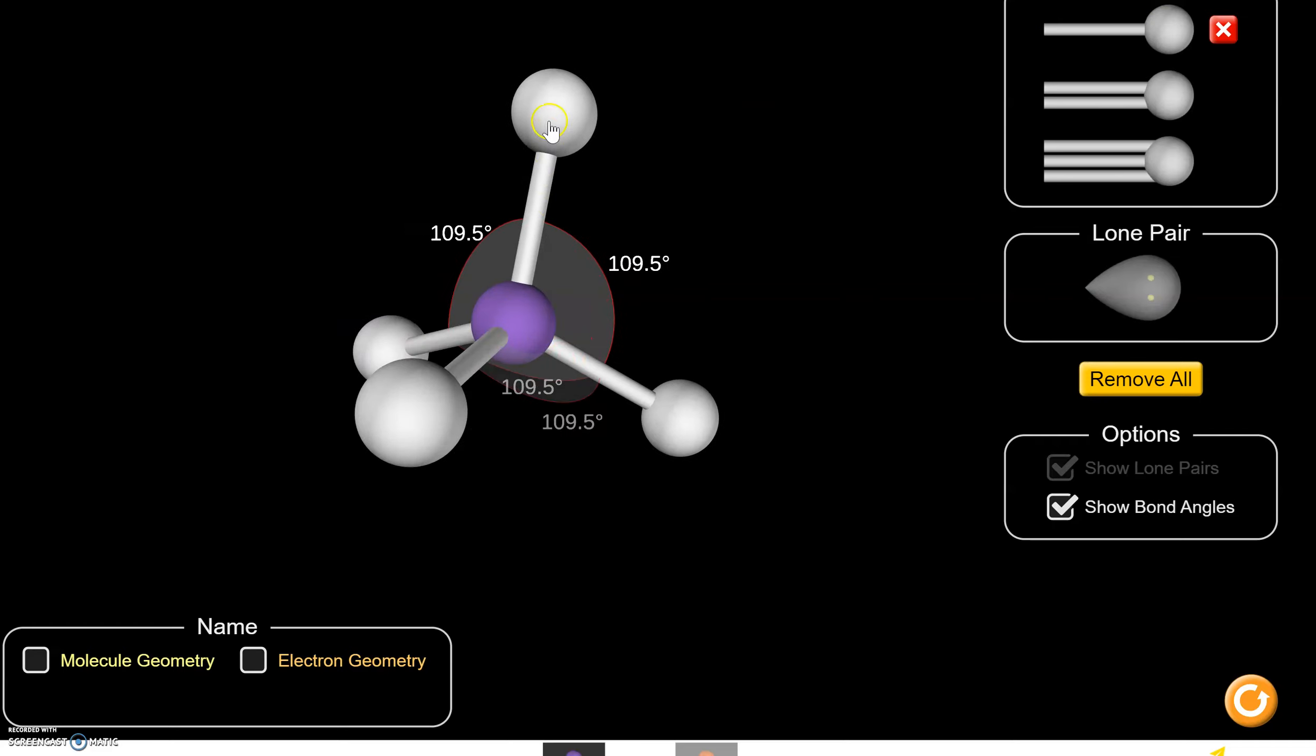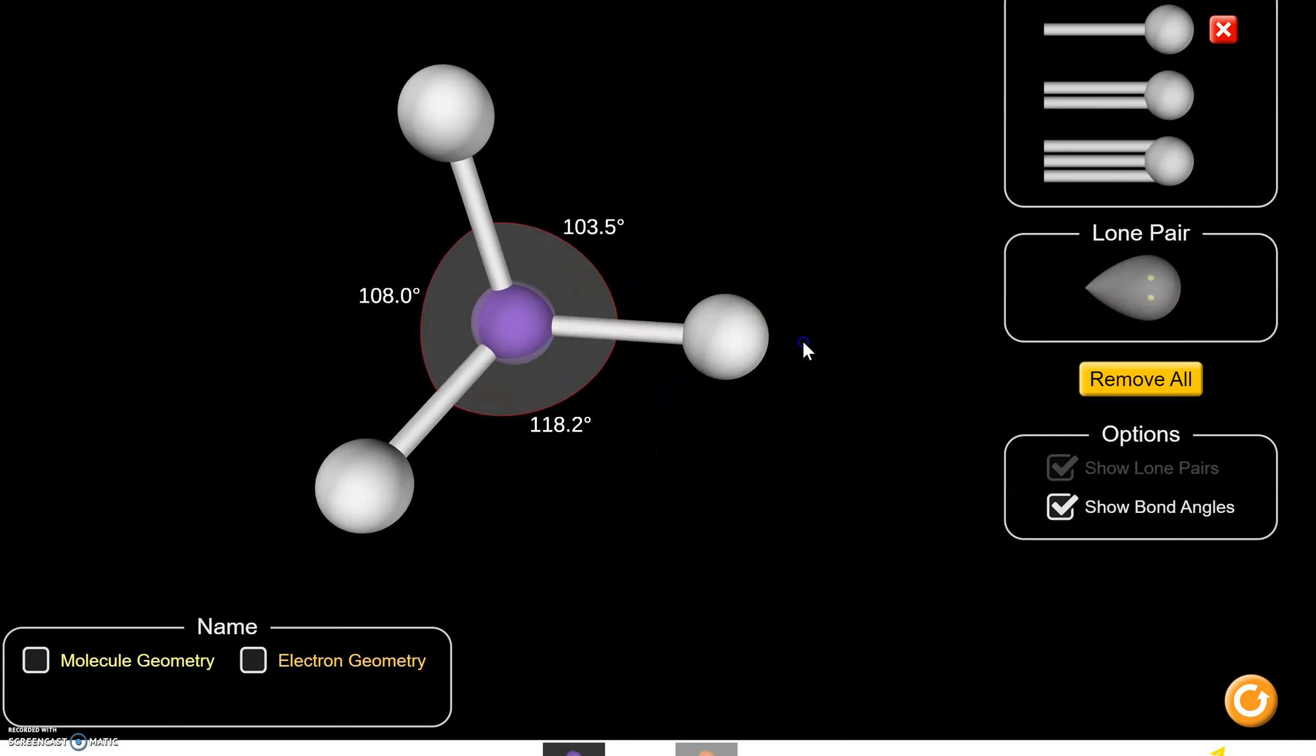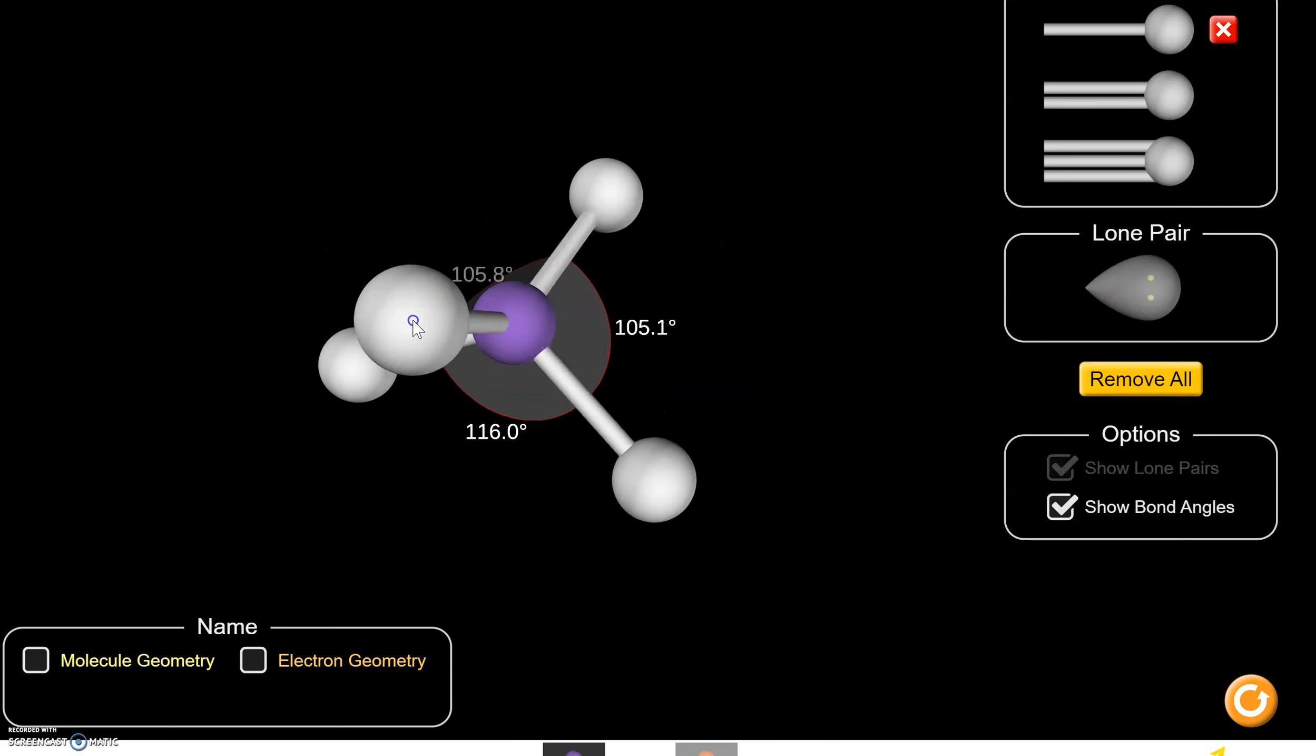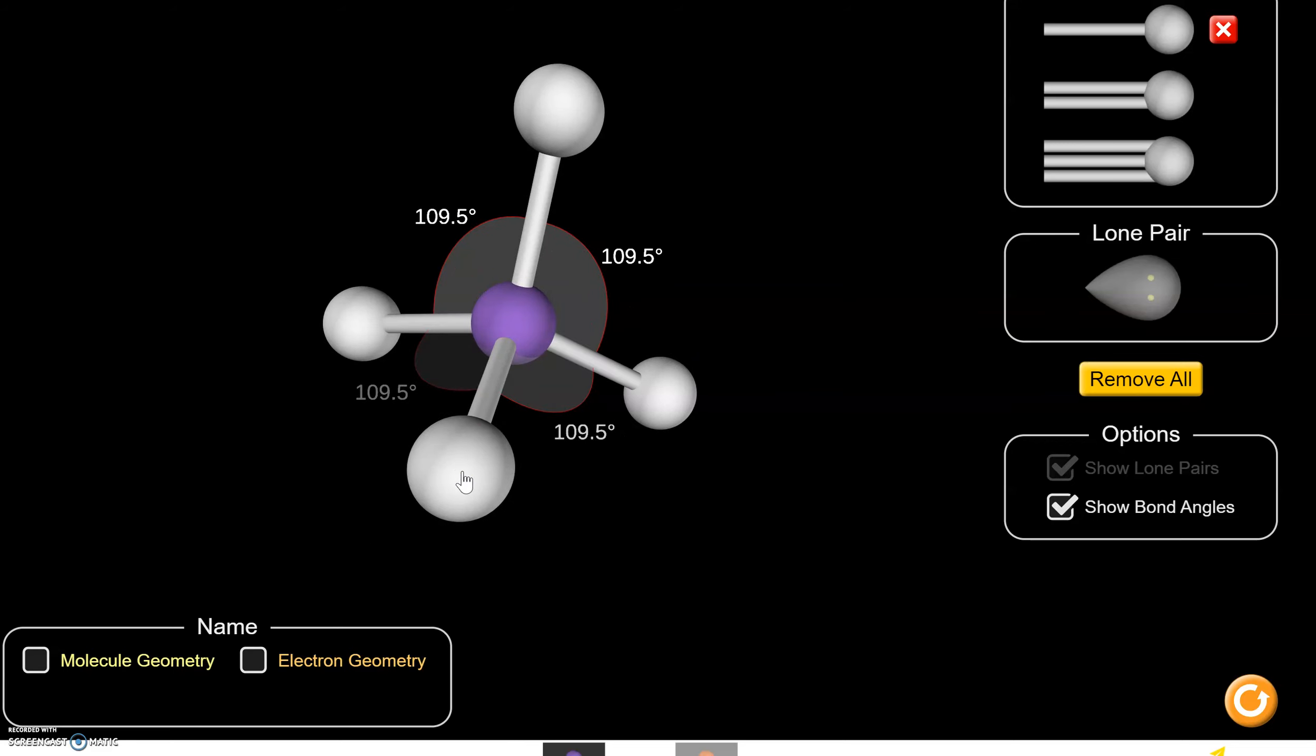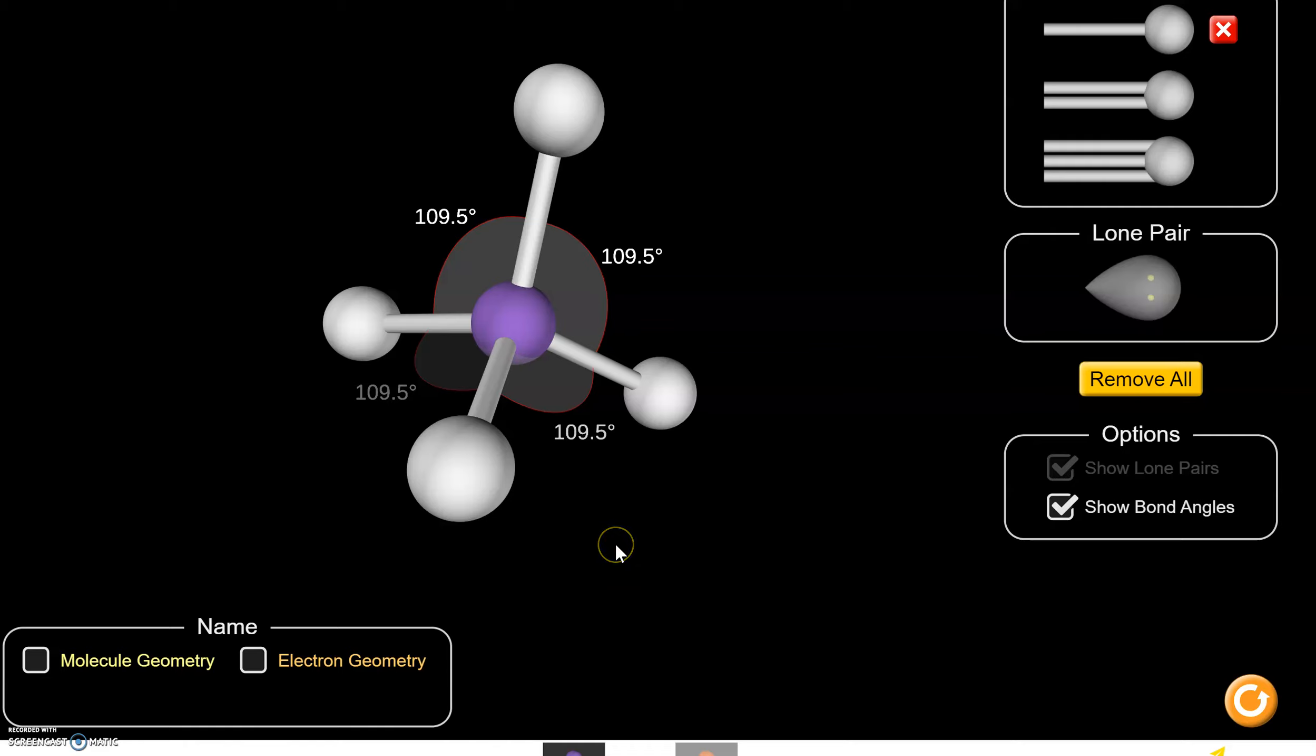And this is our tetrahedron. It has this three-dimensional shape where the four atoms that surround the central atom are as far away from each other as they can possibly get. Not 90 degrees, as this model suggests, but 109.5 degrees, which is what this model suggests.